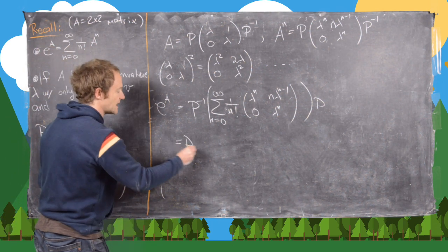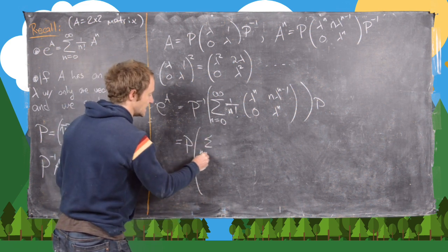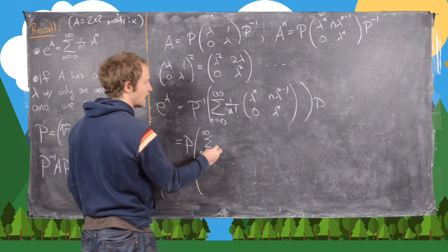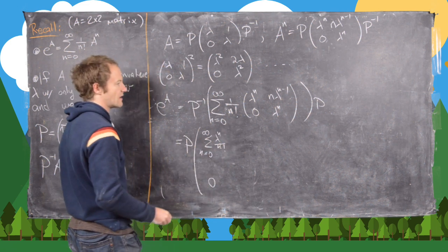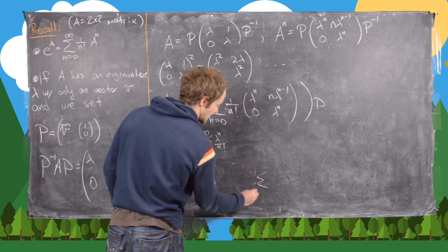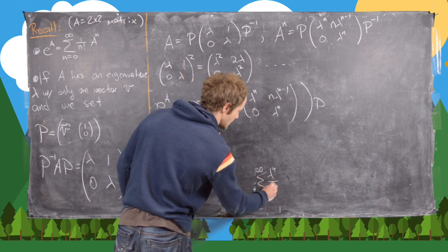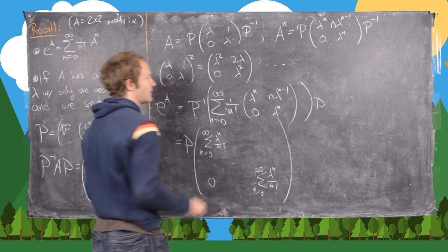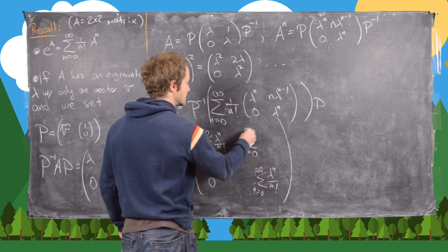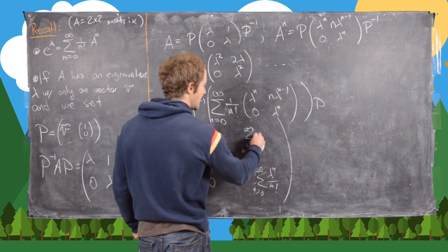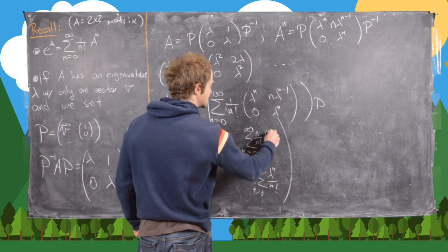So that's going to give us P, and now we're going to have the following matrix. We're going to have the sum n equals 0 to infinity of λⁿ over n factorial. We've got 0 down here. Down here we have n equals 0 to infinity of λⁿ over n factorial. And then finally up here we have the following: the sum n equals 0 to infinity of n over n factorial times λⁿ⁻¹.